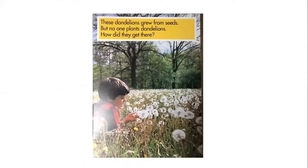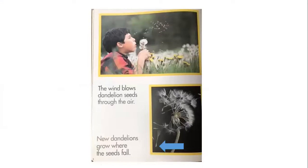These dandelions grew from seeds, but no one plants dandelions. How did they get there? Those probably look familiar to you. Just like the boy in the picture, he is blowing on that dandelion and all those seeds are flying out. The wind blows dandelion seeds through the air, and new dandelions grow where the seeds fall. I put in a little blue arrow to show you that when you blow on one of these dandelions, that is the seed — it almost looks like the seed is hanging from a parachute.